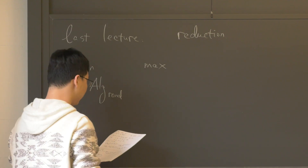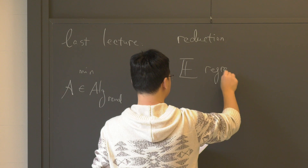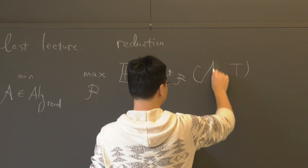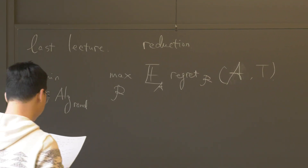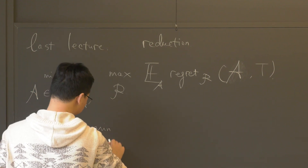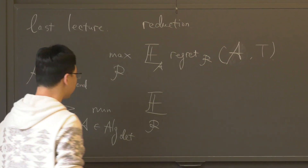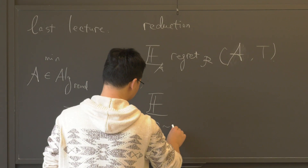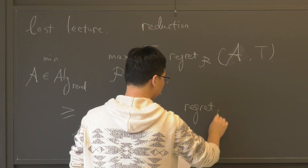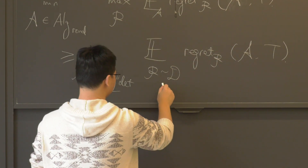We need to construct a hard instance which is specific to this algorithm, and we expect a regret — this is the original target of lower bounds. We're trying to prove this is lower bounded by something. By reduction, we can actually reduce it so we no longer need to look at the randomized algorithm; we only need to look at deterministic algorithms. We can take expectation, and we are no longer looking at algorithm-specific hard instances, but taking expectation of a problem instance over some distribution.